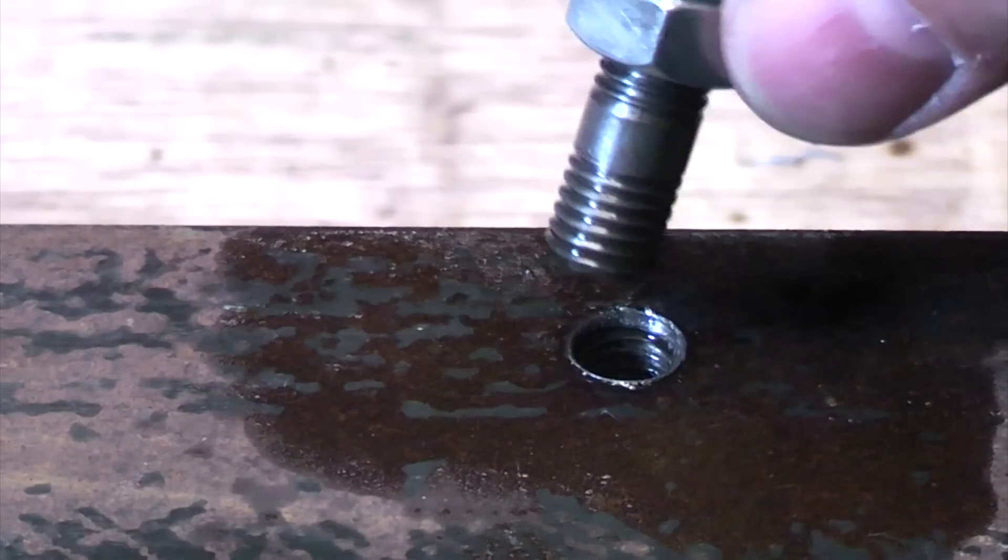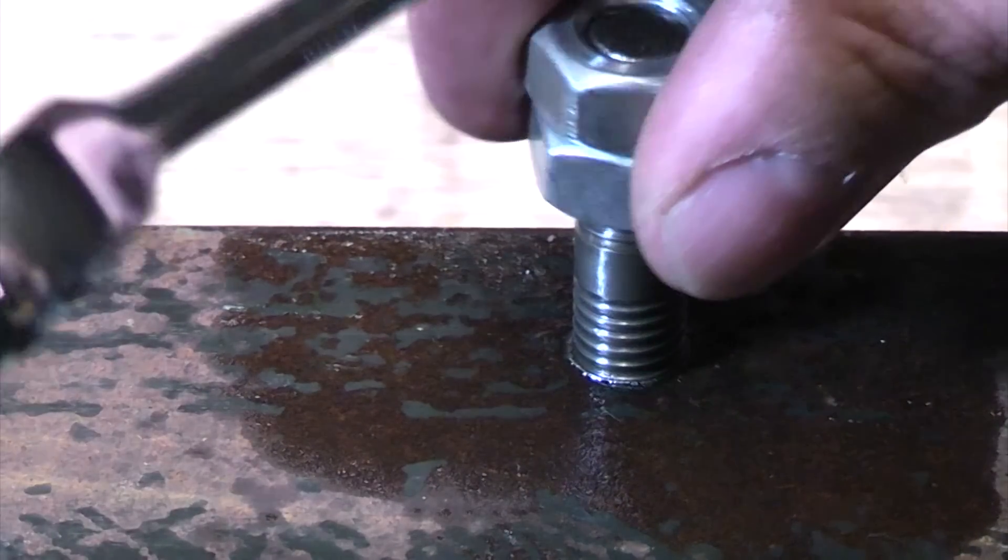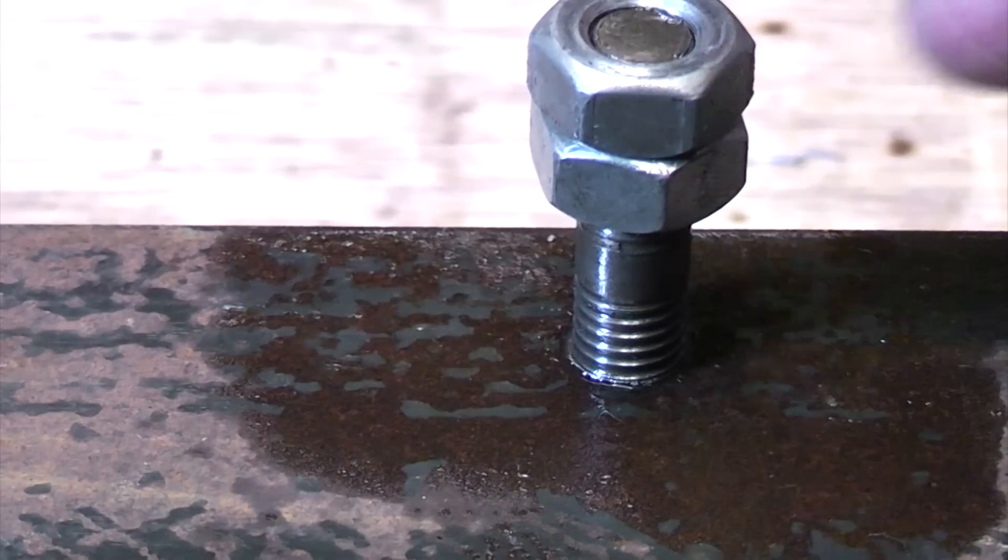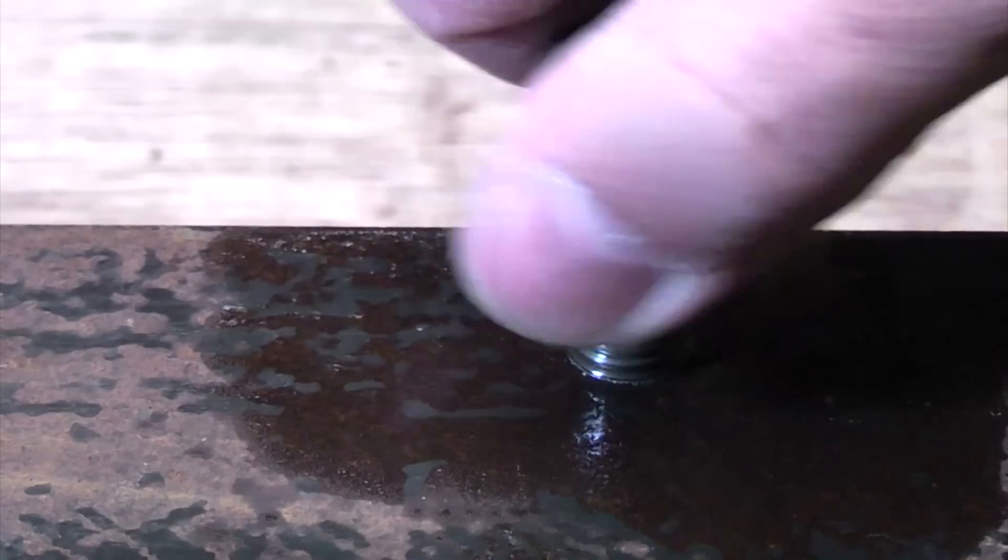And it's not always as easy as that, believe me. If you're trying to get one out on an engine that's been in for 10 years, it's really difficult and a lot of the time they will snap off. But that is a good way to try and get them out by locking two nuts on together.